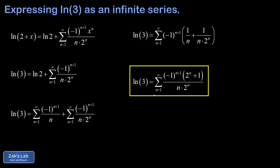To get a sense of what this series looks like in expanded form: plugging in n equals 1 gives positive 3 over 2; n equals 2 gives negative 5 over 8; n equals 3 gives positive 9 over 24. Recall that natural log 2 looked like 1 minus one-half plus one-third minus one-fourth and so on. Keep computing these terms and you get closer and closer to natural log 3.